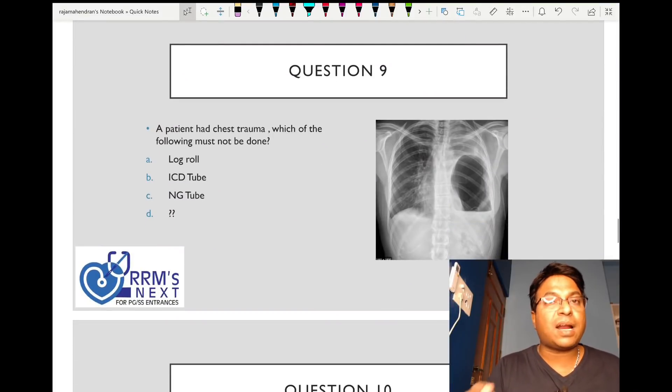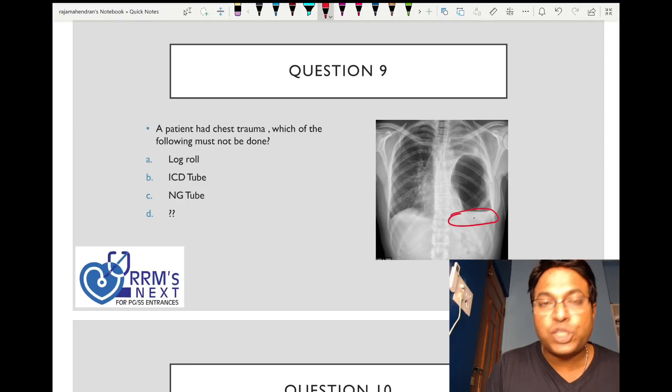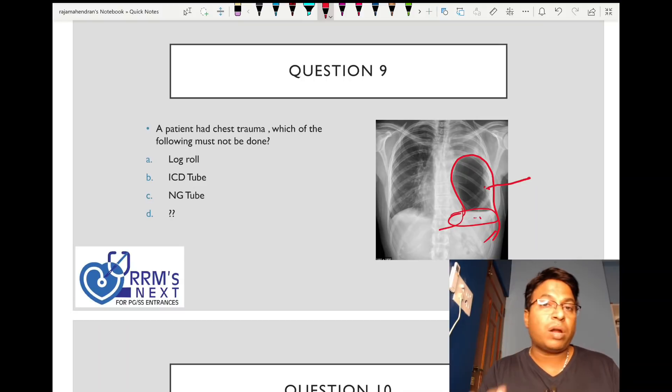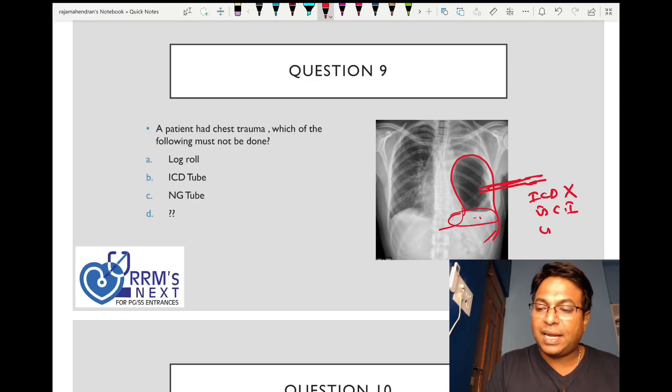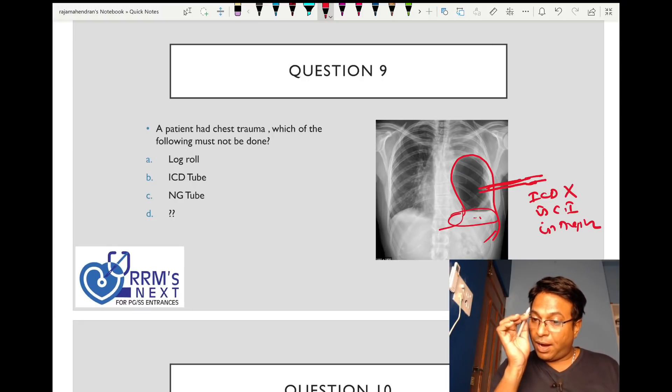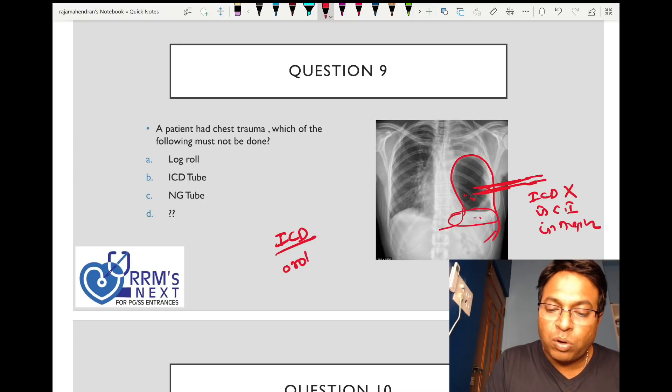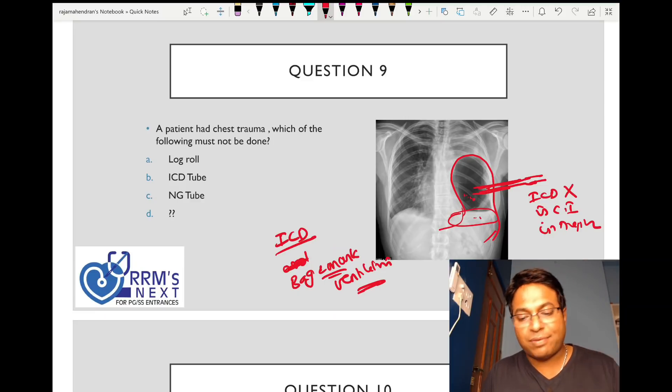Patient had chest trauma. This x-ray shows traumatic injury of diaphragm with bowel gone inside, a traumatic diaphragmatic hernia. What should not be done? I should not think it's pneumothorax and put an ICD. ICD is contraindicated in diaphragmatic hernia because I will puncture the bowel. Two things should not be done: ICD should not be placed and bag and mask ventilation without intubation should not be done.